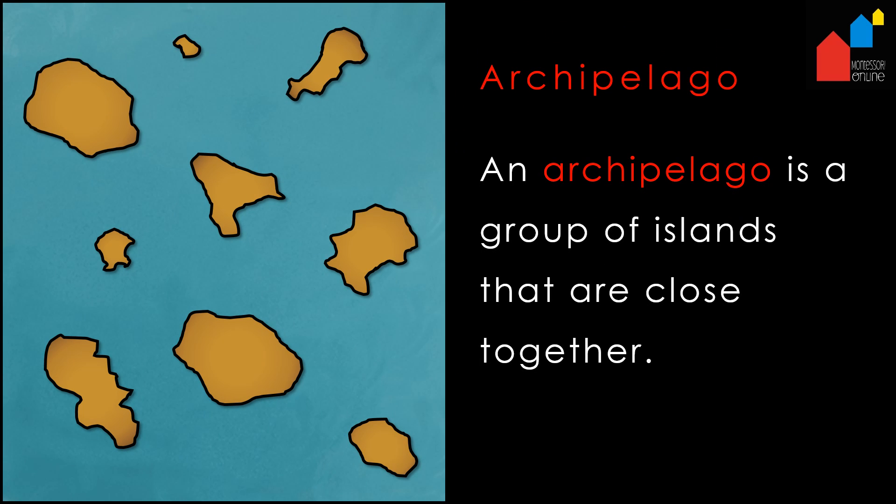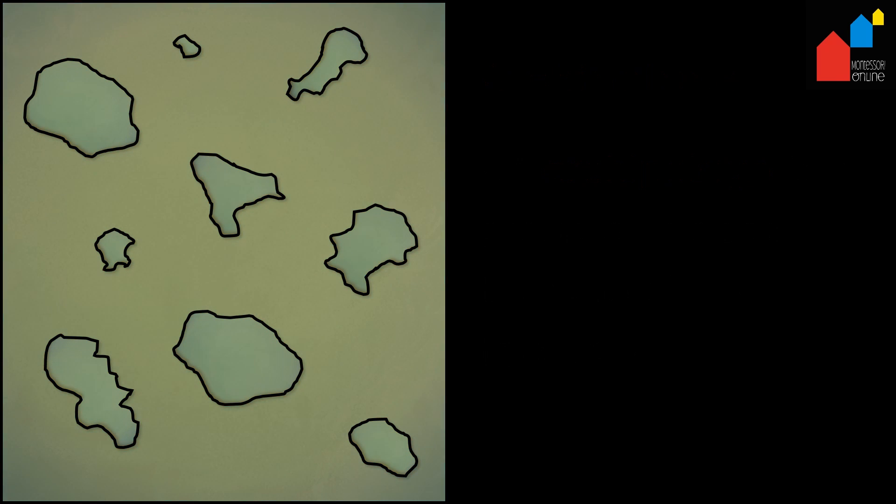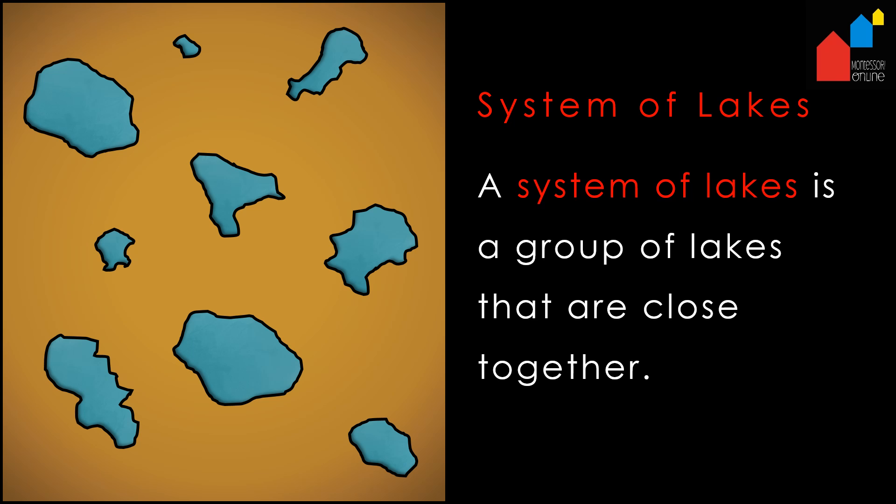An archipelago is a group of islands that are close together. A system of lakes is a group of lakes that are close together.